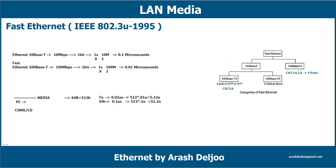Let me explain collision delay in Ethernet and Fast Ethernet. In 10 Mbps Ethernet (10Base-T), one bit can be sent in 0.1 microseconds, since we can send 10 Mbps in one second. In Fast Ethernet (100Base-TX), at 100 Mbps, one bit can be sent in 0.01 microseconds.